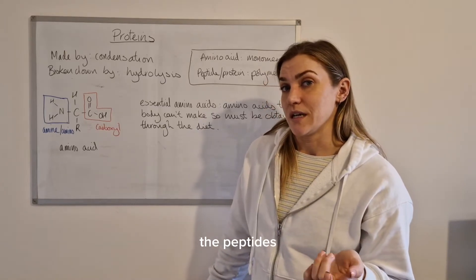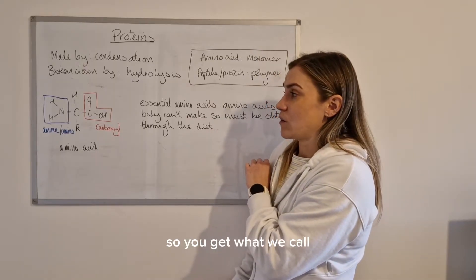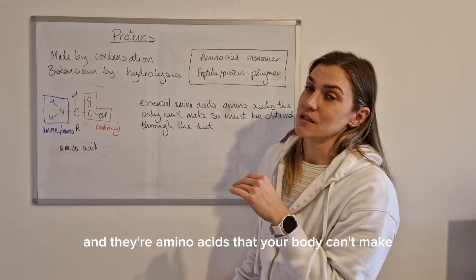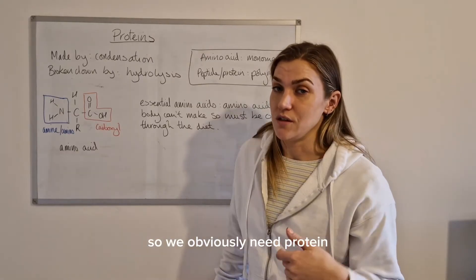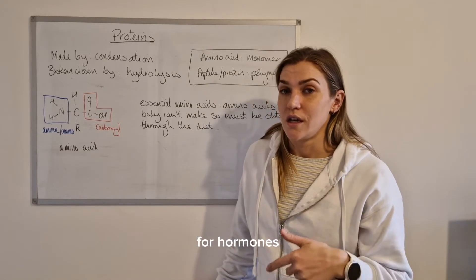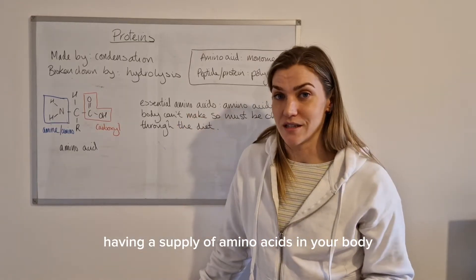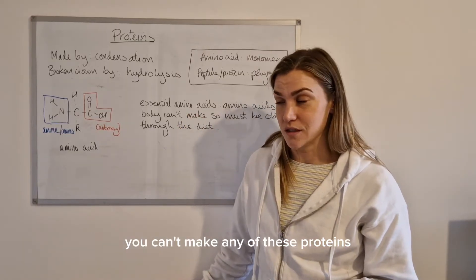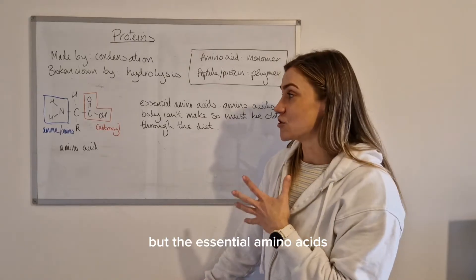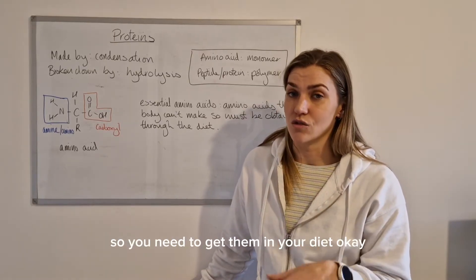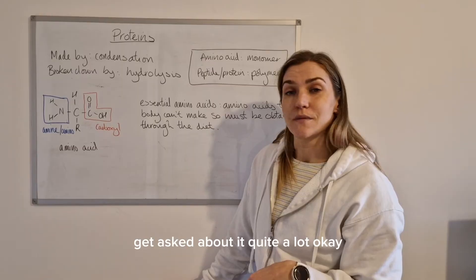Before we go on to actually looking at what the peptides or proteins actually look like, just one more thing on the amino acids. So you get what we call essential amino acids and they're amino acids that your body can't make so you have to obtain them through your diet. So we obviously need protein for our muscle, for tissue, for hormones and lots of things in our body, our hair. And without having a supply of amino acids in your body you can't make any of these proteins. Now there are some amino acids that your body can produce from other amino acids if it needs them but the essential amino acids are the ones that your body can't make so you need to get them in your diet. Okay, so that's just a term that you need to try and remember because you will get asked about it quite a lot.